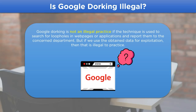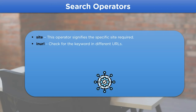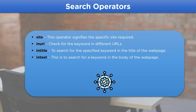Now that we understand some general information about Google Dorking, let's take a look at the operators. The first operator is the site operator, which searches for a specific site. Then we have inURL, used for a specific keyword in the URL. Then intitle, used to search for a defined heading in a web page. Similarly, the intext operator searches for a specific keyword in the body section of a web page. Finally, filetype allows us to search for a particular type of file, such as a PDF or a log file.